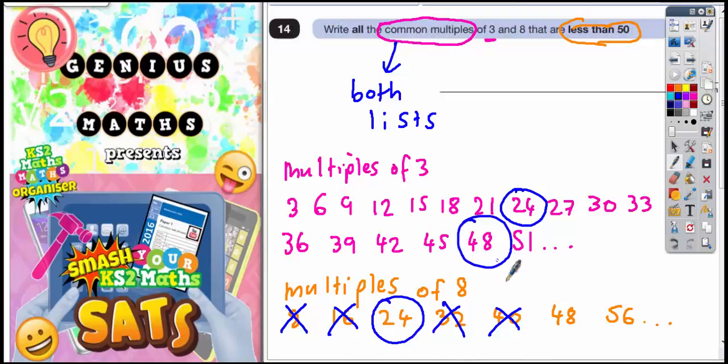There it is. Look, 48 is in both lists. OK. And 51 and 56 don't count anyway because they aren't less than 50. They've gone over 50. So very simply the answer is the two numbers that you've circled. So common multiples of 3 and 8 that are less than 50. Well the first one is 24 and the other answer is 48.